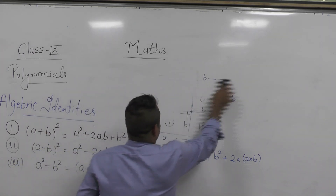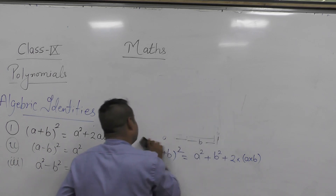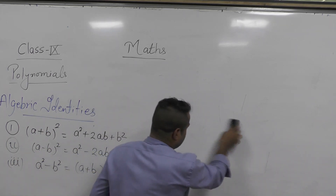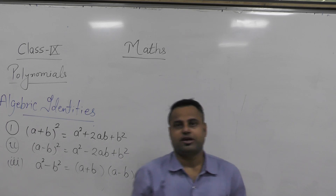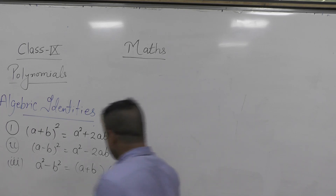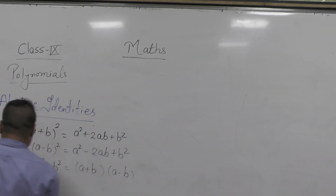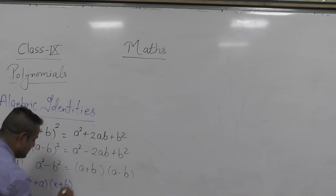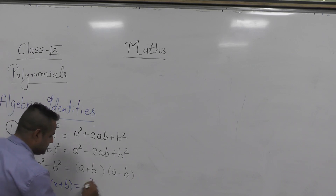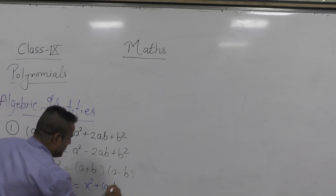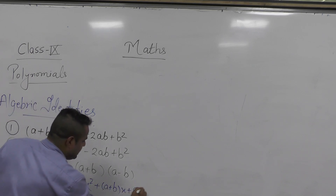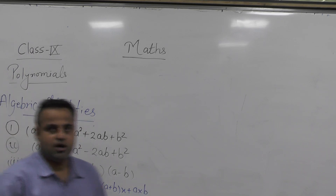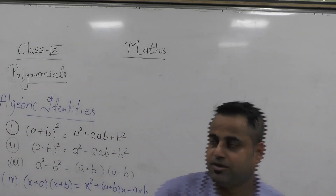Now we will see some of the questions. Beside of that, we have learnt the fourth identity in your eighth class. If you remember it well, it is X plus A into X plus B. It equals X square plus A plus B into X plus A into B. So we will see now one example of each identity.